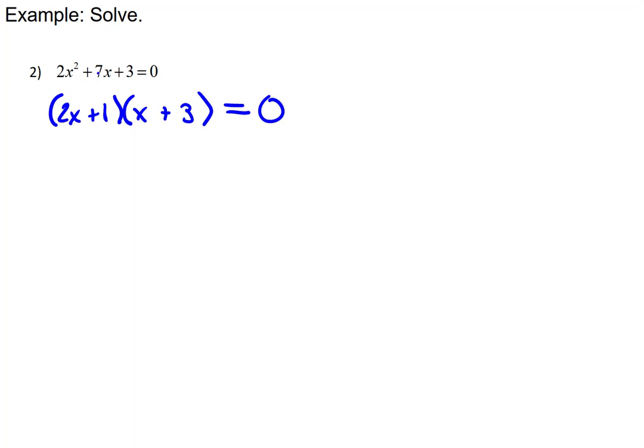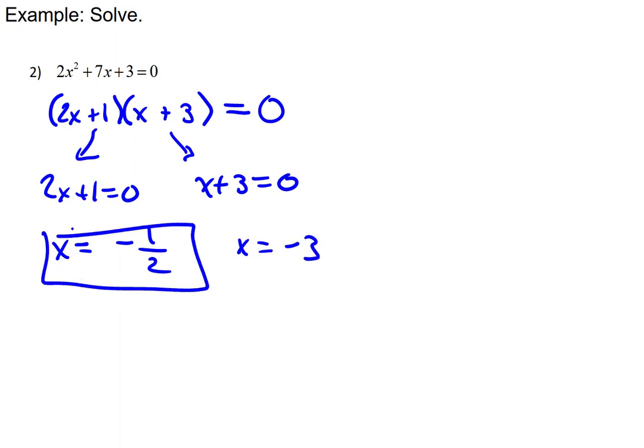And then the zero product property at this point will tell us to set each of these factors to 0. That means 2x+1 = 0, or x+3 = 0, and we'll solve each for x, giving us finally x = -1/2, or x = -3. And so these are the two solutions that we get for this quadratic equation.